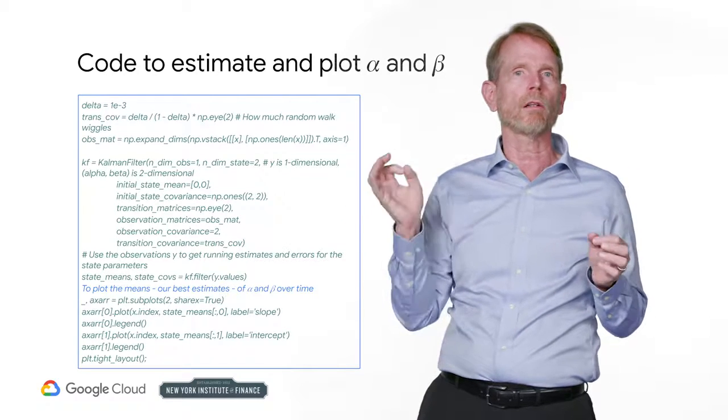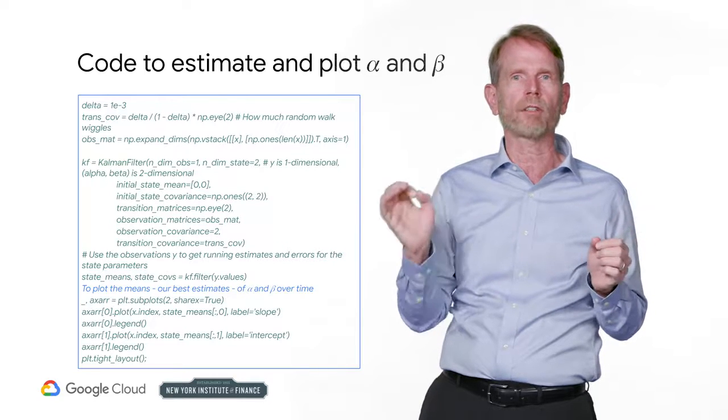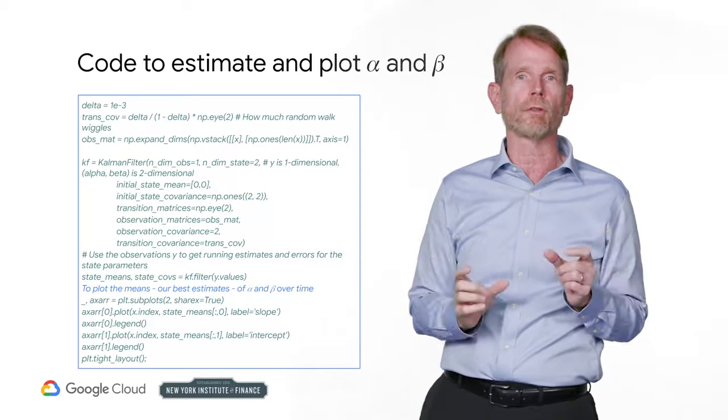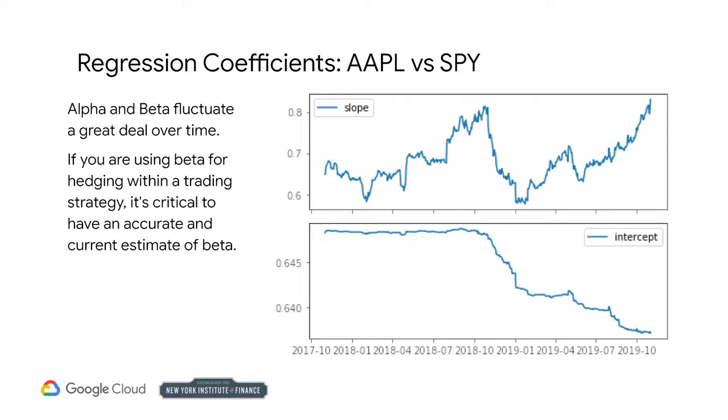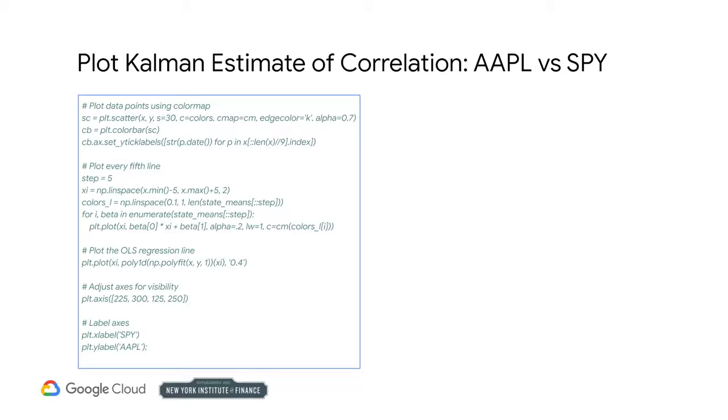Now we are ready to use our observations of y to evolve our estimates of the parameters alpha and beta. We will use colors to indicate the dates that the data points x sub i and y sub i correspond to. Notice how much the parameters fluctuate over long periods of time. If we are basing a trading algorithm on this such as something that involves beta hedging, it's important to have the best and the most current estimates of beta. In order to minimize clutter, we will only plot every fifth Kalman estimate of alpha and beta. We will also adjust the plot axes to improve visibility.